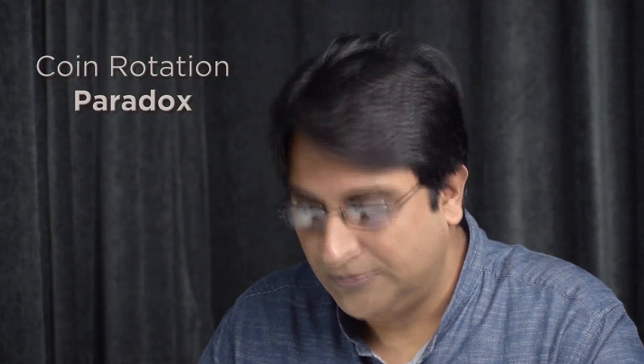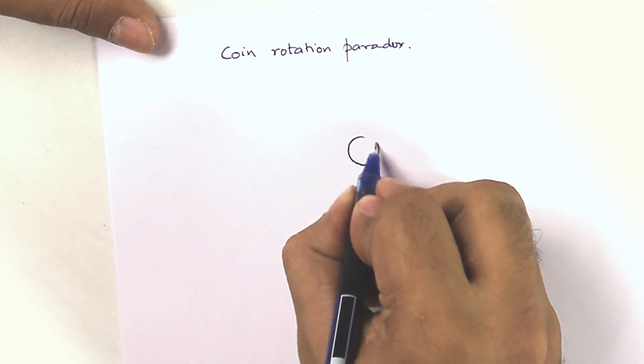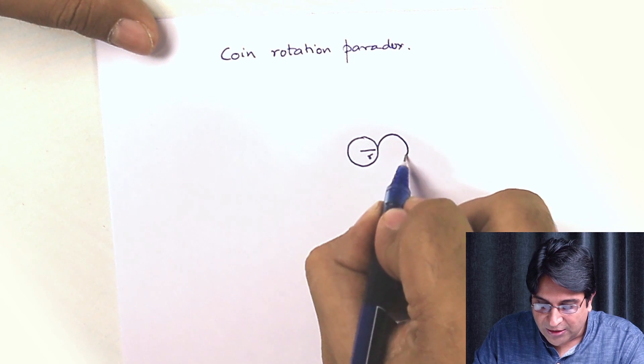Let us look at a very interesting problem, and this is famously called the coin rotation paradox. Let me try to explain what this is. Consider a coin of radius R. Now imagine that there is an identical coin right next to it, also of radius R.